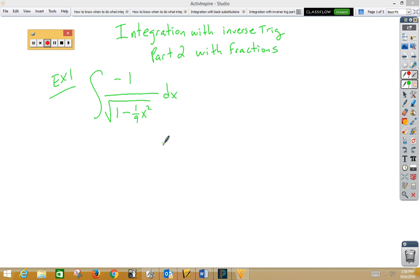So, in this problem, we're thinking what would go inside of here, and that would be a one-third x. u is one-third x. du would be one-third dx. So, I'm going to need a one-third, so I'll put a 3 out front.